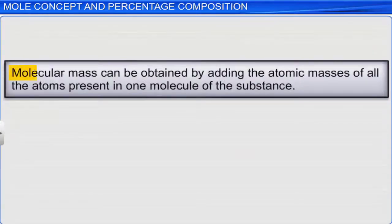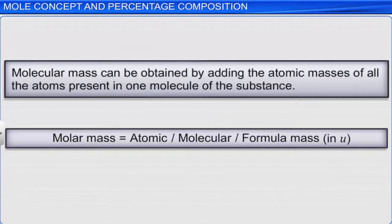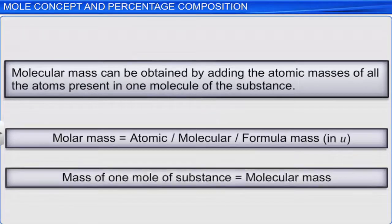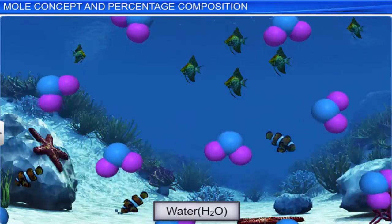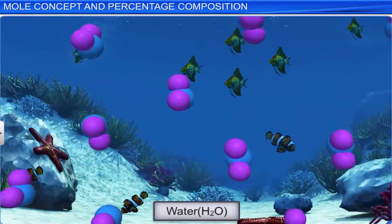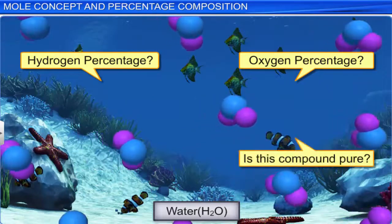We've learnt that the molecular mass of a substance can be obtained by adding the atomic masses of all the atoms present in one molecule of the substance. And the molar mass is numerically equivalent to the atomic or molecular or formula mass in U. Thus, we can conclude that the mass of one mole of any substance is equal to its molecular mass. We have seen how to determine the number of entities present in a substance.